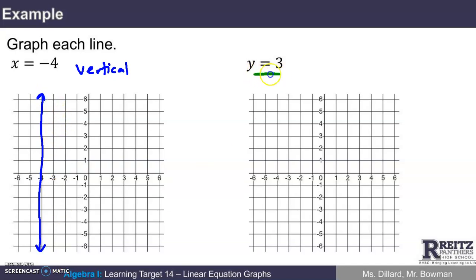What would y equals 3 look like? It would be the line where every point on the graph has a y value of 3. It's a horizontal line.